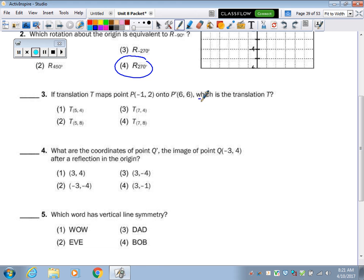Okay, what is the translation? So I'm looking for a capital T that moves a negative 1 over to a 6. Well, that's moving it to the right 7. And a 2 up to a 6 is moving it up 4.